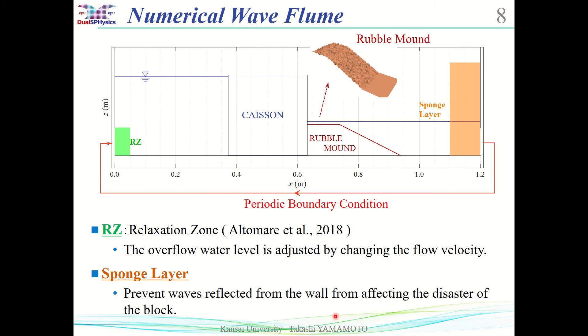Next, I explain the numerical wave flow. Tsunami is generated by inputting a constant horizontal flow velocity to the relaxation zone. Behind the breakwater, a rubble mound is built considering the unevenness, and armor blocks are placed on the mound.